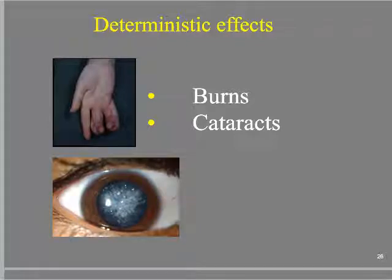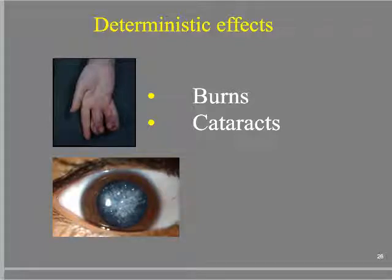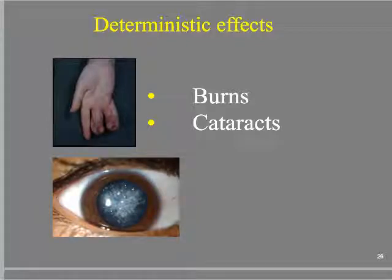Cataracts are interesting — it's a cloudiness in the lens of the eye. Imagine the lens like a windshield, and you're driving behind a gravel truck on the interstate. Drive long enough behind that truck and your windshield starts to look cloudy. The exact same thing is happening with radiation-induced cataractogenesis — enough little things hitting the lens of the eye, and eventually the lens starts to look cloudy. They are determined by the dose.